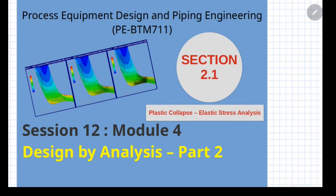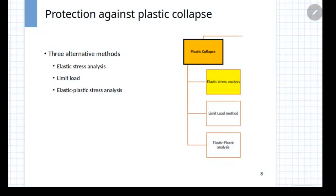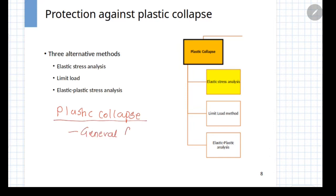Let us understand the first of the mandatory checks, that is the plastic collapse. A plastic collapse is defined as the one where there is a general failure of a section. What we mean by general failure is if we consider a cylinder which is subjected to internal pressure, what we do not want is the entire cross section getting ruptured or cracked in total.